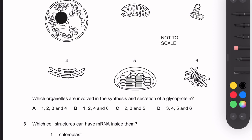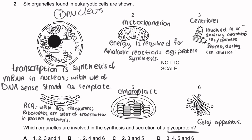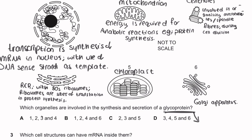Question 2: Six organelles found in eukaryotic cells are shown. Which organelles are involved in the synthesis and secretion of glycoprotein? Number one is the nucleus — site of transcription, which is the synthesis of mRNA using the DNA sense strand as a template. Protein synthesis involves two processes: transcription and translation. Glycoproteins are formed first by protein synthesis, then the protein is combined with a carbohydrate.